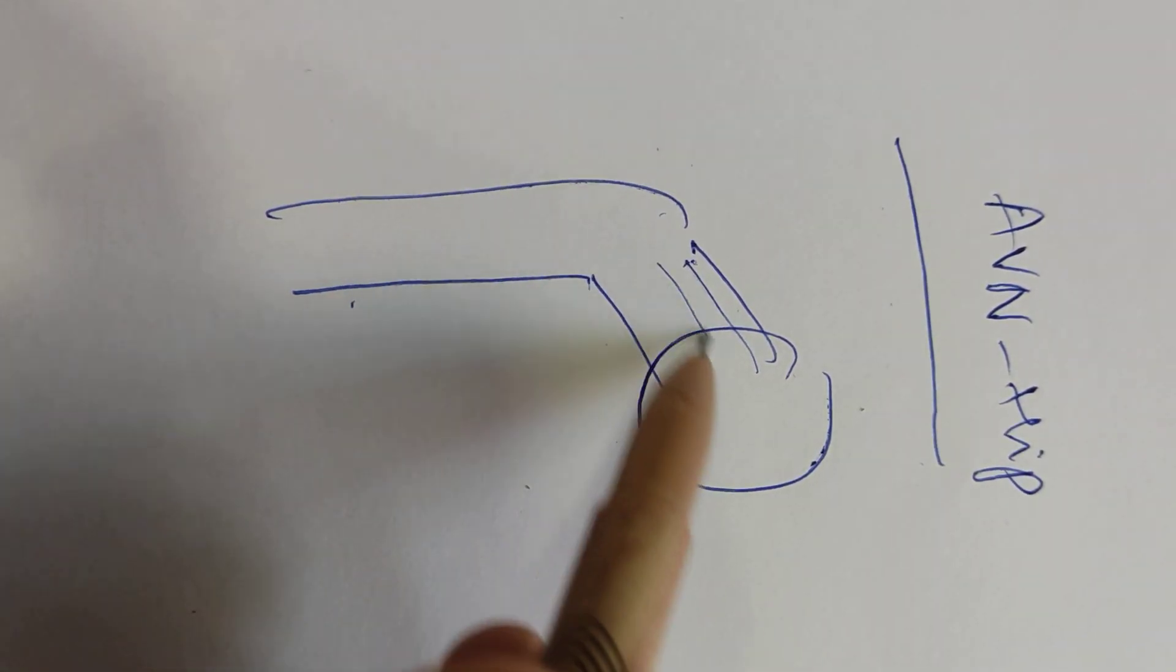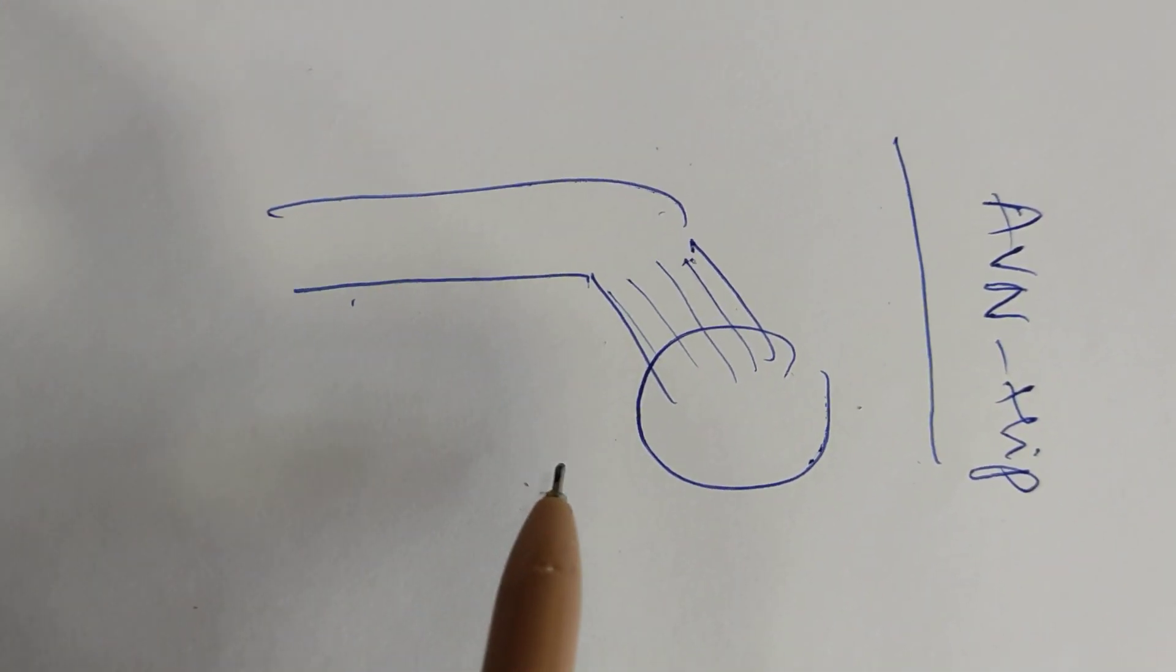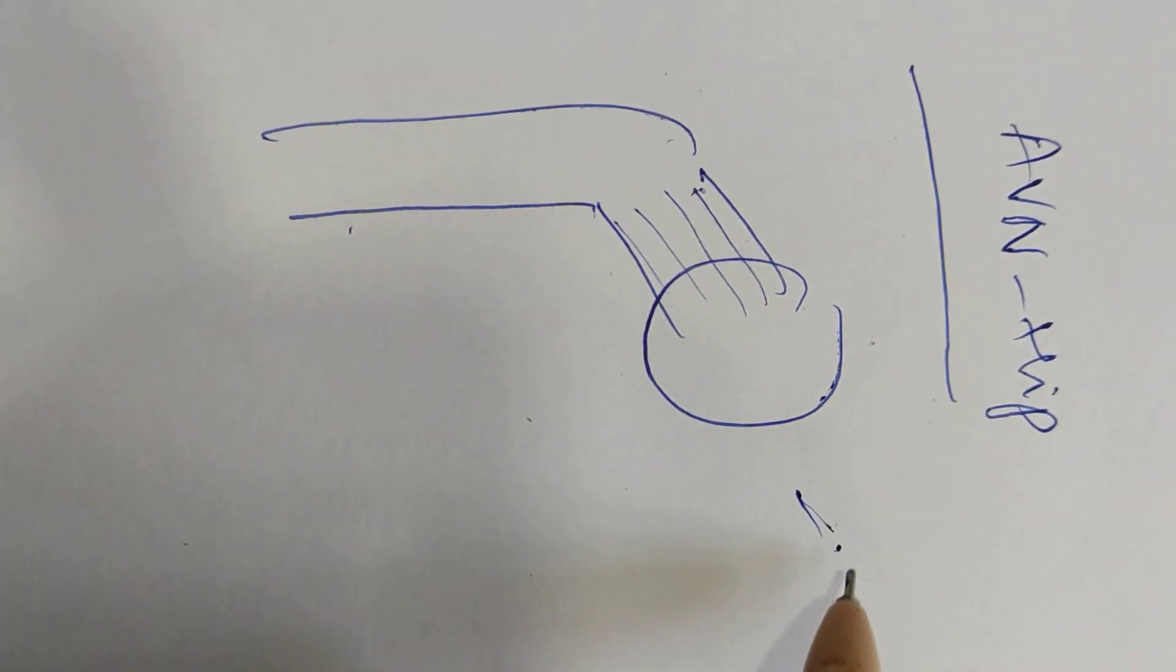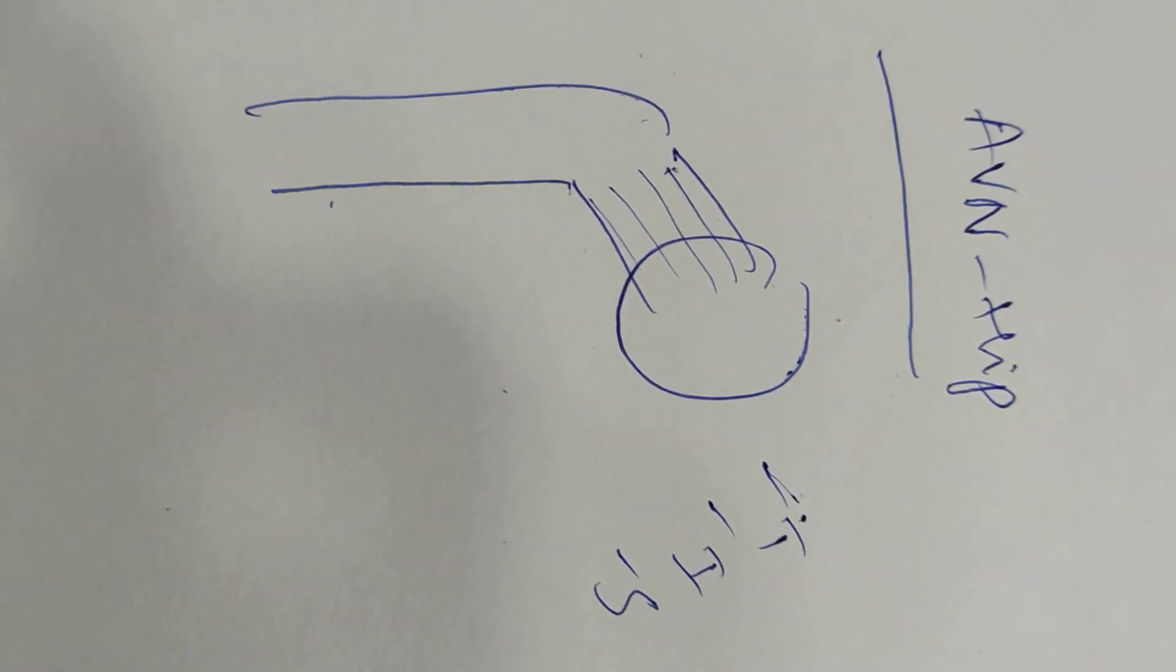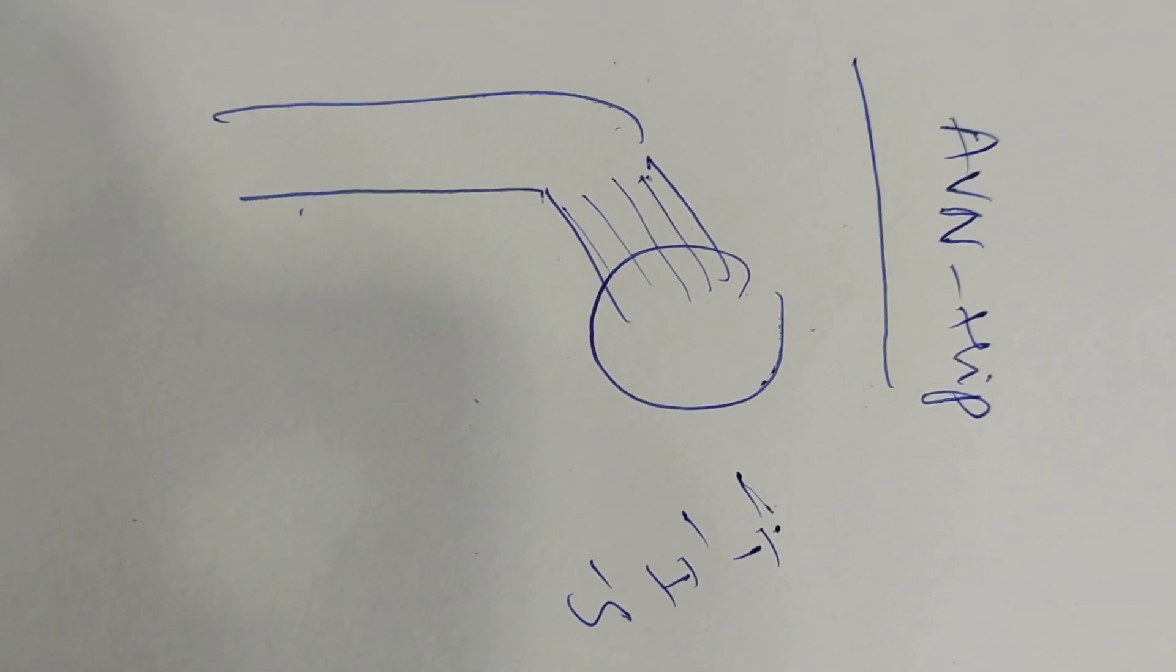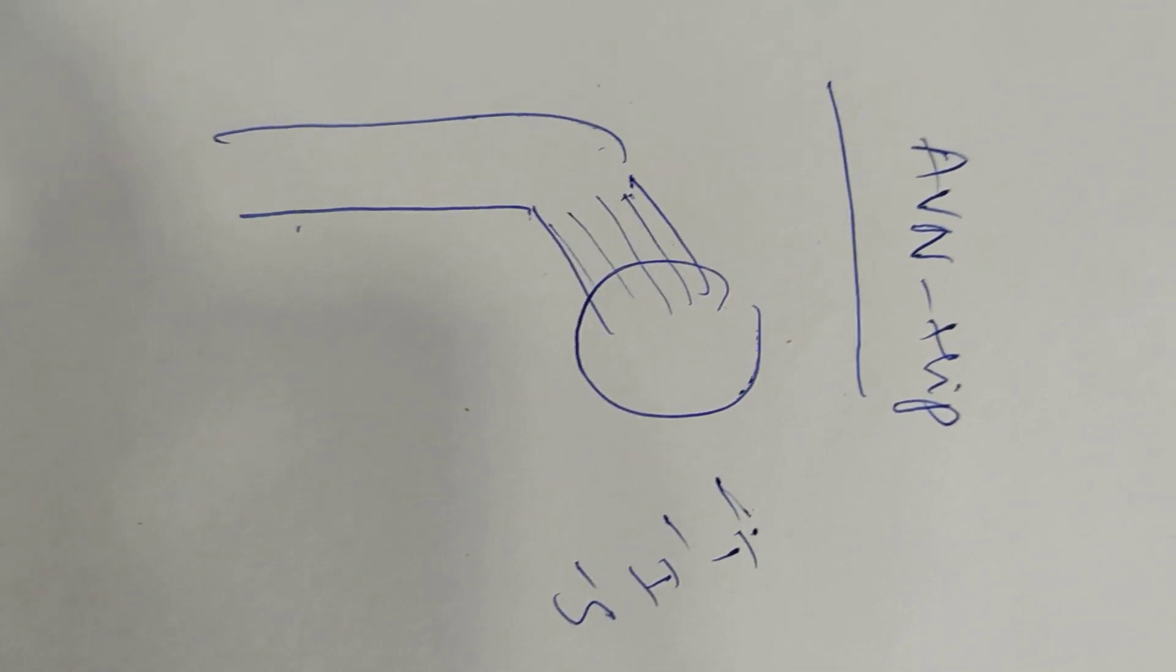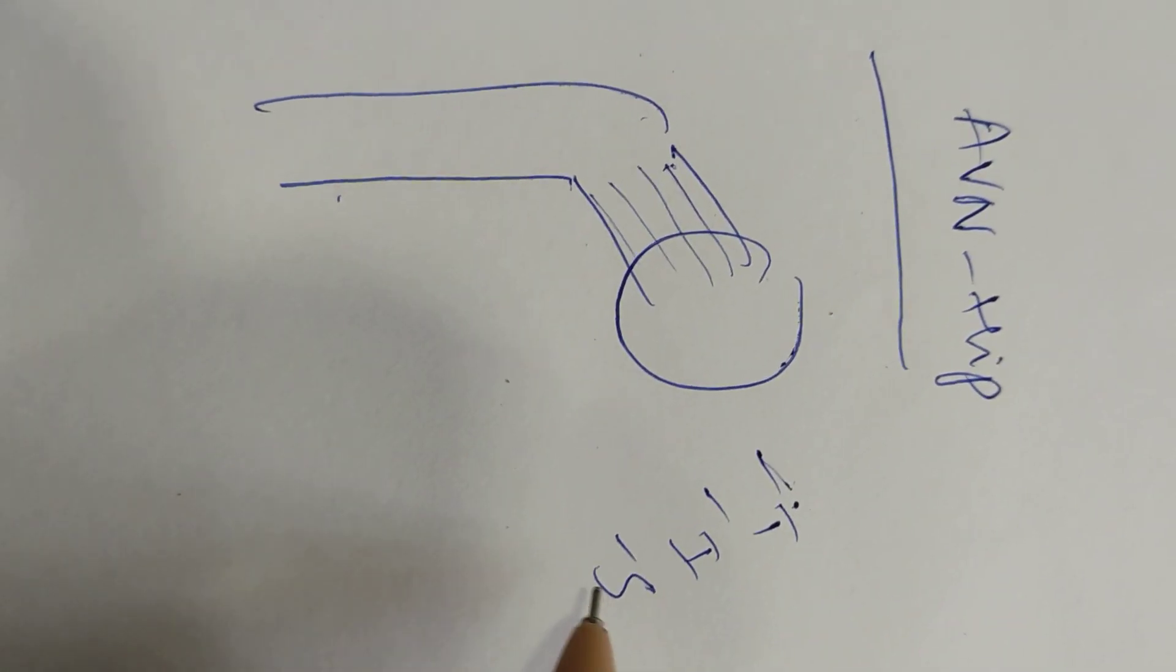There is blood supply in the hip joint. Causes that can damage this blood supply include trauma, infections, steroids, diseases like sickle cell disease, and excessive alcohol.